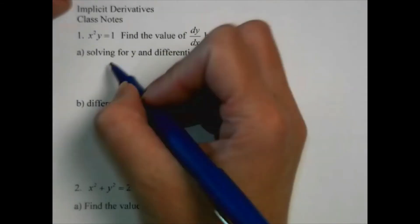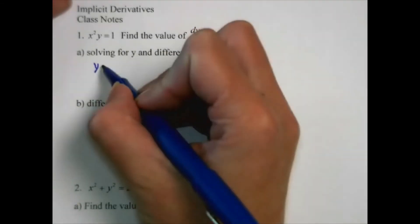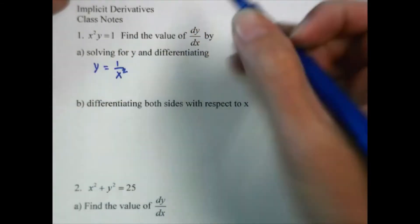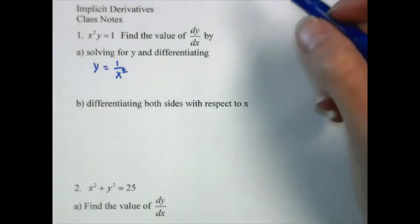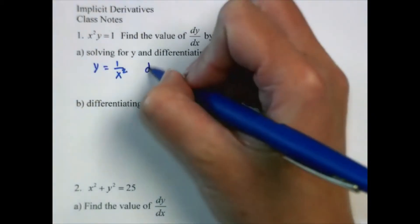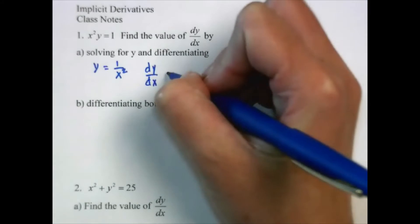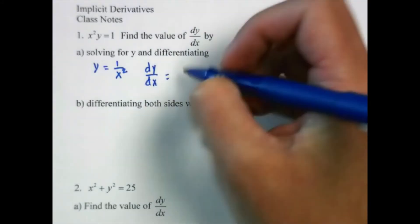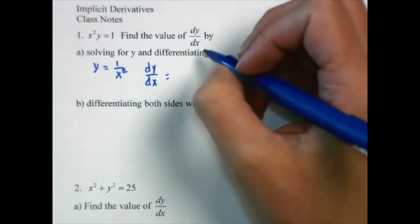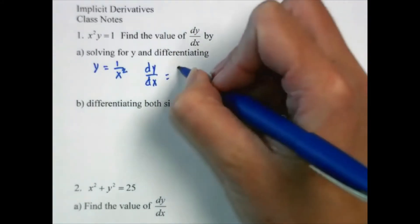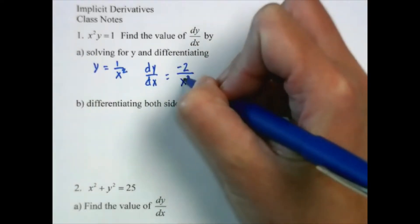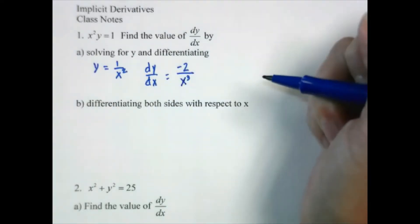First, just solving for y. So y would equal 1 over x squared. Taking the derivative, dy/dx — this would be the same as x to the negative 2 — so this is going to be negative 2 over x cubed.